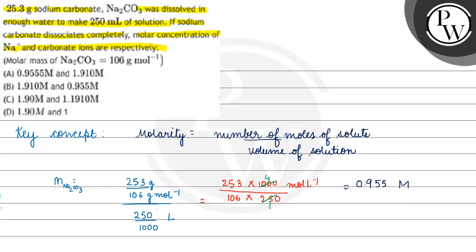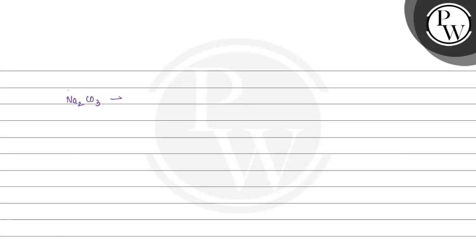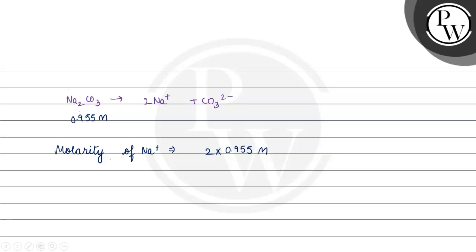If Na₂CO₃ is completely dissociated, it produces Na⁺ ions and carbonate ions. Since there are 2 sodium ions per formula unit, the molarity of Na⁺ is 2 × 0.955 = 1.910 molar.